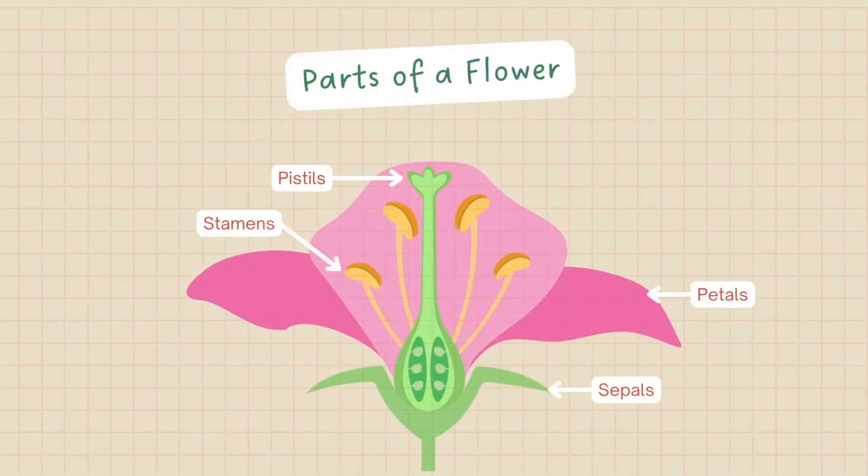Let's take a closer look at the structure of a flower. Flowers consist of various parts, including petals, sepals, stamens, and pistils. Each part has a specific role in the reproductive process. Petals attract pollinators, sepals protect the developing flower bud, while stamens produce pollen and pistils house the ovules.